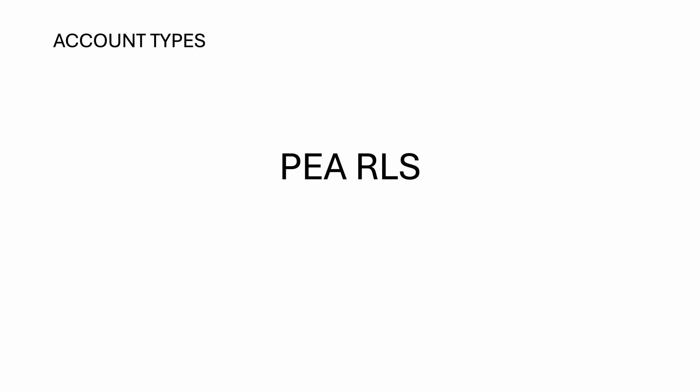Basically, the left side of PEARLS, which represents purchases, expenses and assets, are the debit accounts, whilst the right side, which represents revenue, liabilities and sales, are the credits.